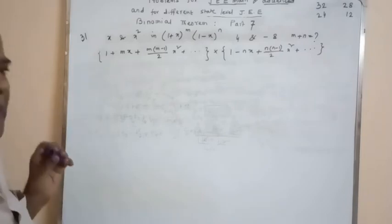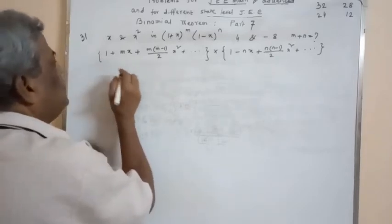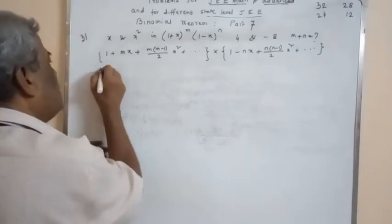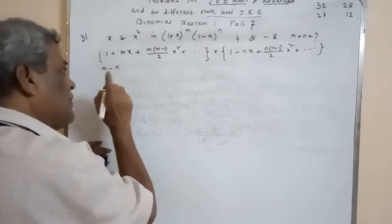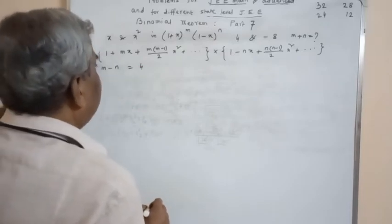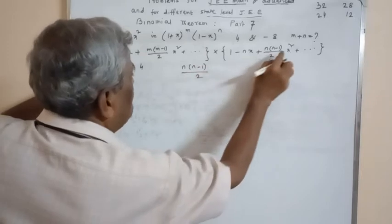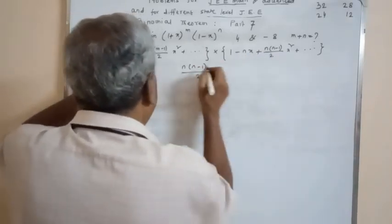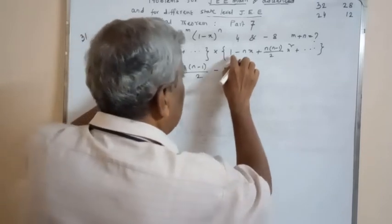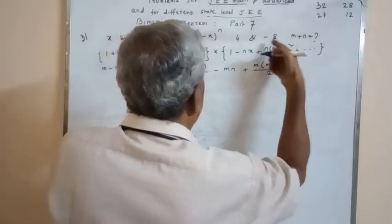Given that the coefficient of x in that expansion is 4. Collecting the coefficient of x: 1·(-n) + m·1 = m - n, so the coefficient of x equals 4. And for the coefficient of x²: 1·(n(n-1)/2) + m·(-n) + (m(m-1)/2)·1 = -8.